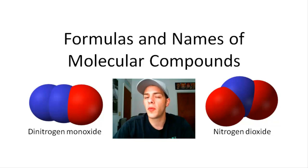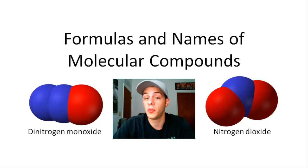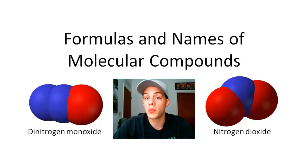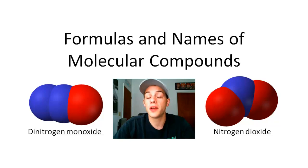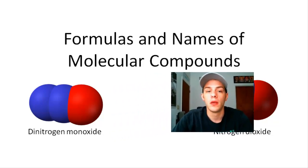This is very different from ionic compounds because oftentimes the formula for an ionic compound can be deduced simply by knowing the constituent elements. The same is not true for molecular compounds because two different nonmetals can combine in various proportions to result in many different molecular compounds. So the way we name molecular compounds is going to be quite different from the way we name ionic compounds.